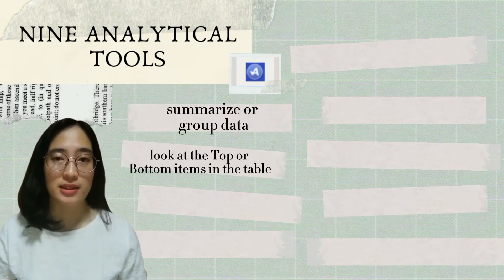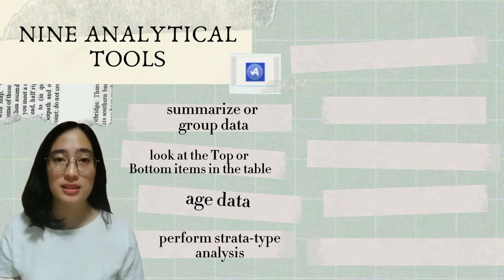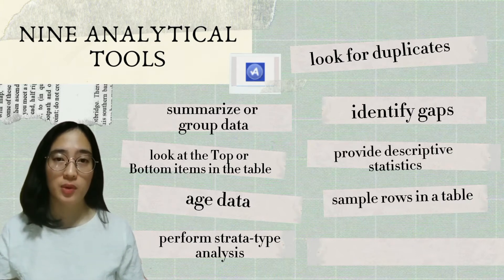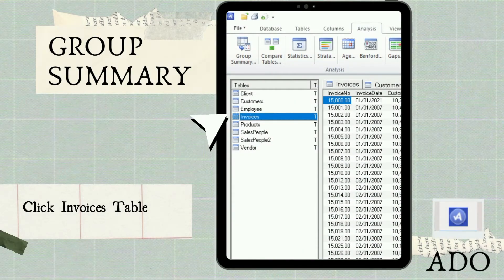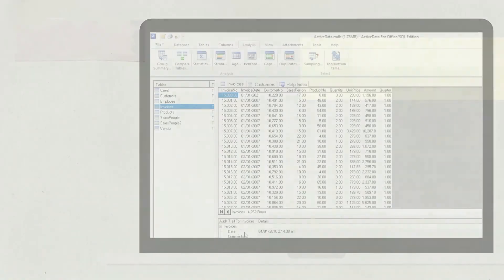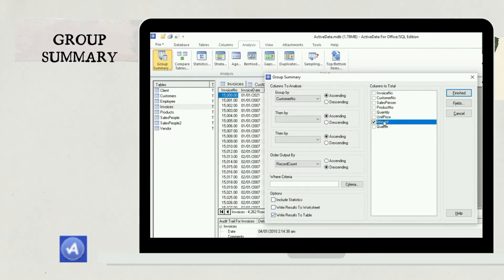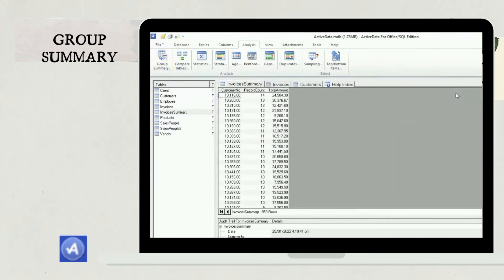The Analysis section lets you summarize or group data, look at the top or bottom items in the table, age data, perform a stratification analysis, look for duplicates, identify gaps, provide descriptive statistics, sample rows, and perform digital analysis. To illustrate the Group Summary function, open Active Data, select the Invoices table, select Analysis, then Group Summary. In the dialog box, select Customer to Group By, Record Count to Order Output By, and an option for saving results. Check the Amount column to Total and click Finish. Active Data creates a new work table called Invoices Summary containing the summarized invoice information.